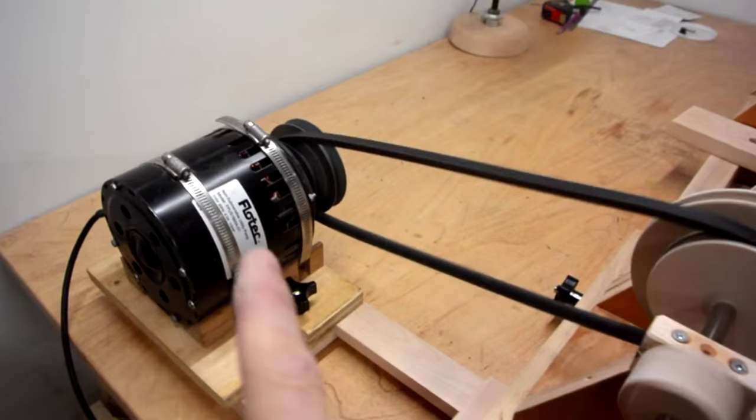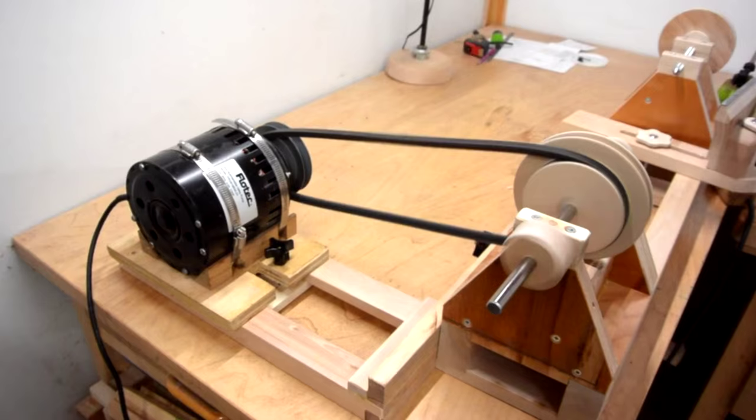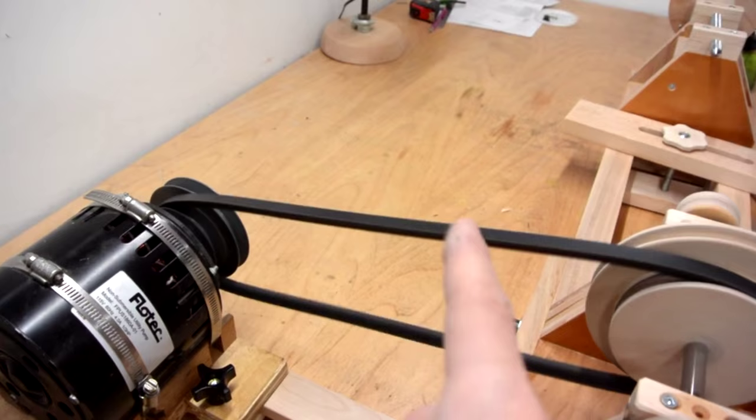And for every action, there's an equal and opposite reaction, which means the whole lathe is gonna shake. Whereas this way, the belt is shaking, but it's very light, so it really can't shake the lathe very much.